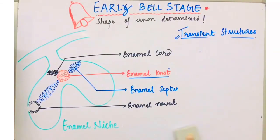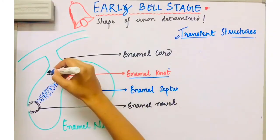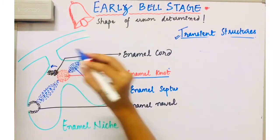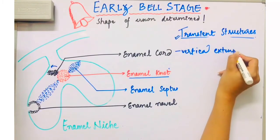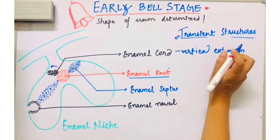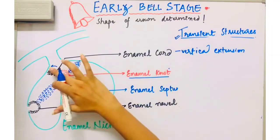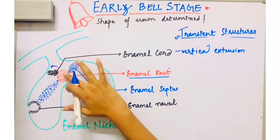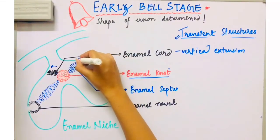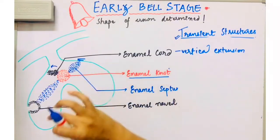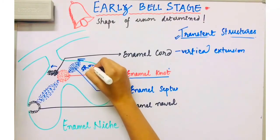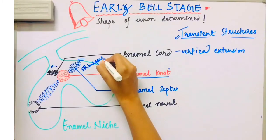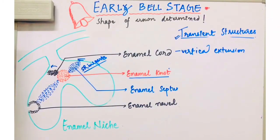The next transient structure is the enamel cord. It is just the vertical extension of the enamel knot. Next is the enamel septum: if this vertical extension extends and meets the outer enamel epithelium, it divides the stellate reticulum into two parts. This is what is known as the enamel septum.